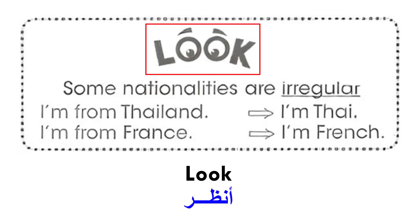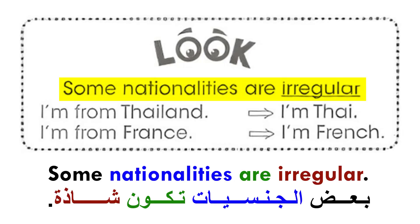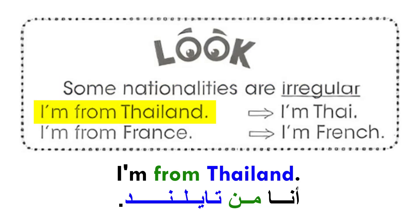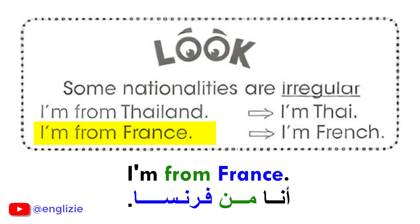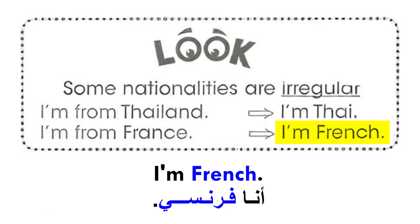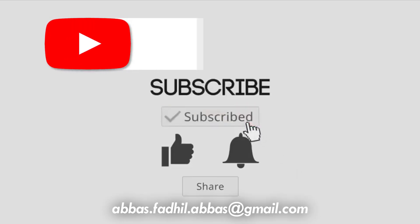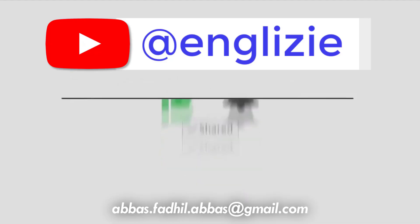Look. انظر. Some nationalities are irregular. بعض الجنسيات تكون شاذة. I'm from Thailand → I'm Thai. I'm from France → I'm French. أنا من فرنسا، أنا فرنسي.